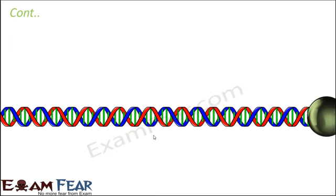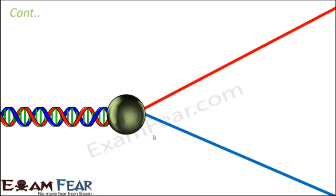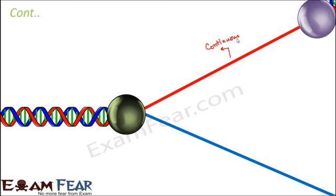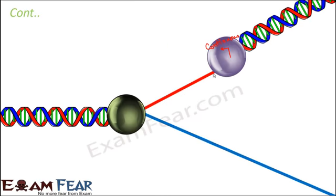In the animation, helicase moves first and separates the two strands by breaking hydrogen bonds. On the continuous strand — the leading strand — DNA polymerase comes into picture and as it moves through the strand it reads the sequence and creates the complementary strand. These two strands together form a new DNA molecule. This is how continuous synthesis takes place.